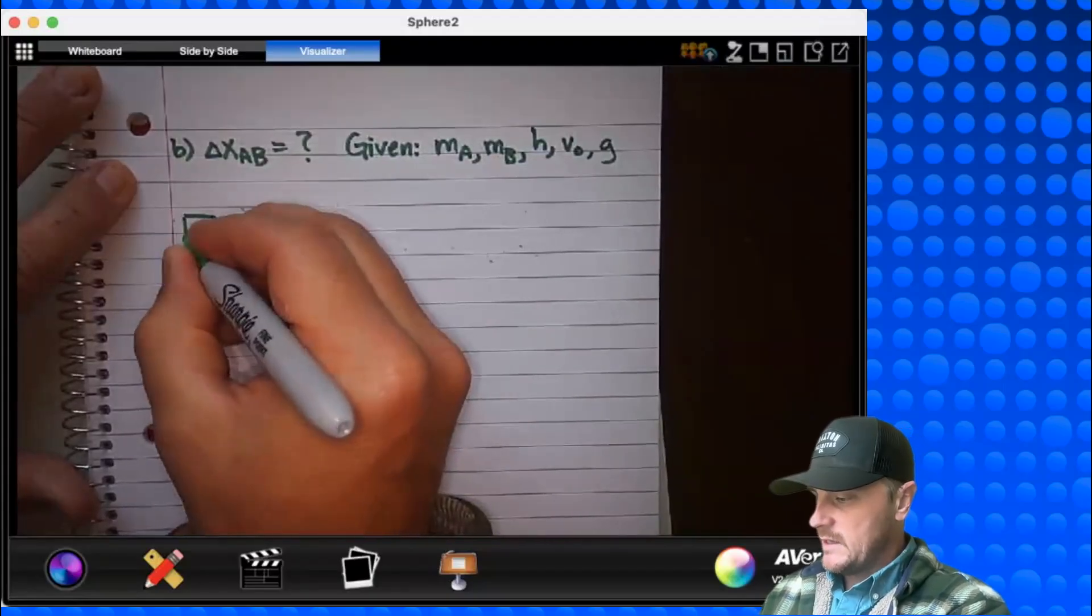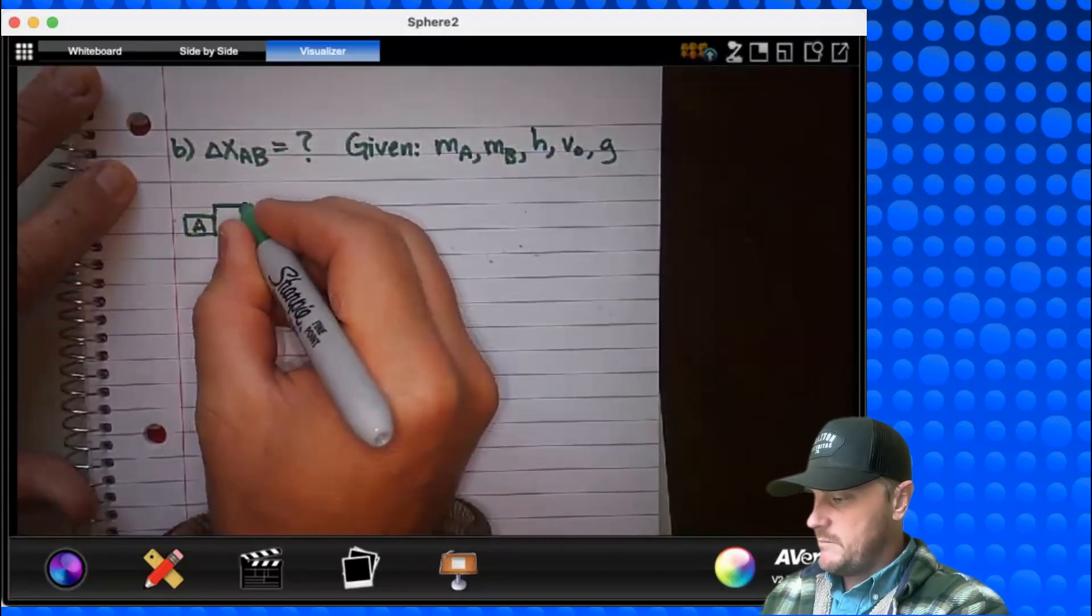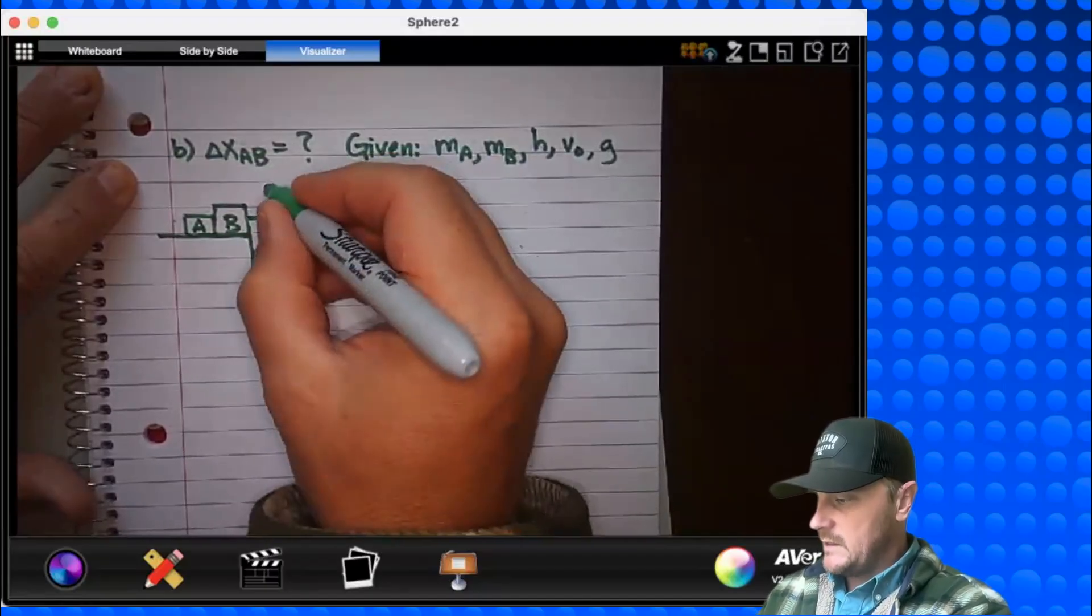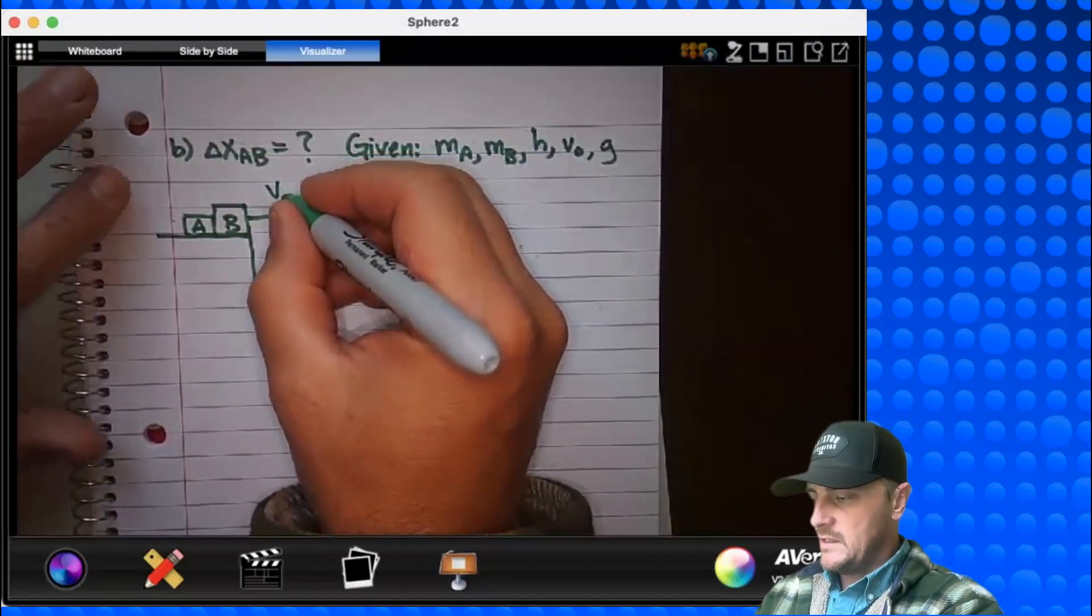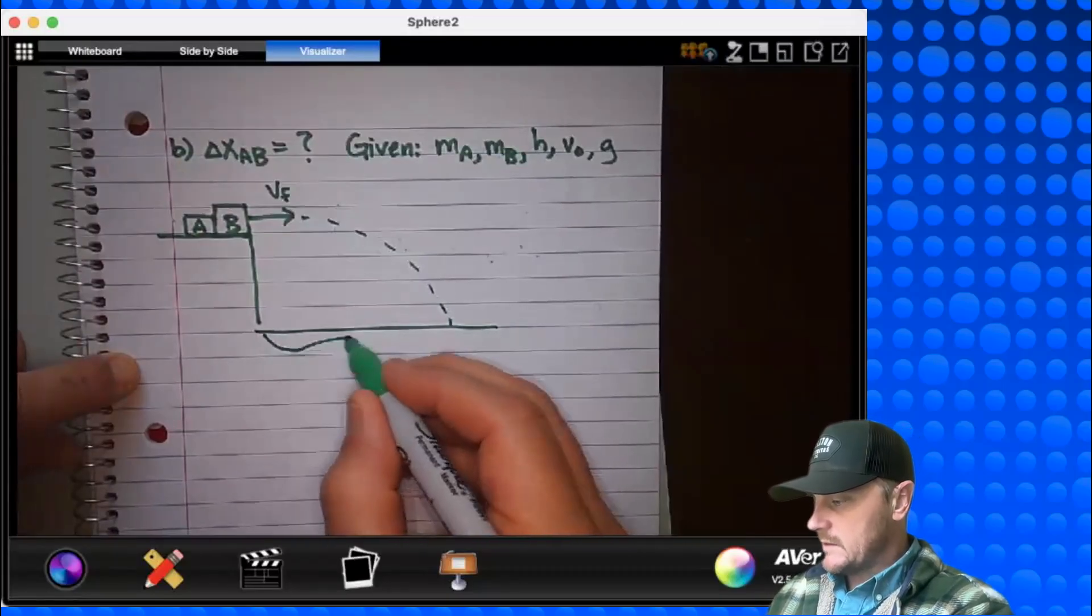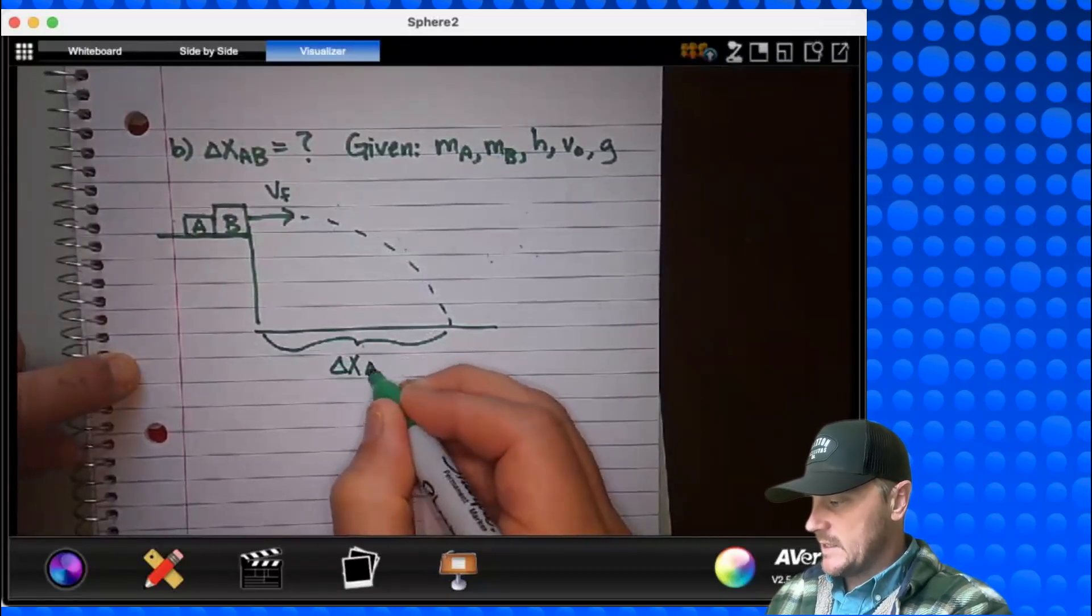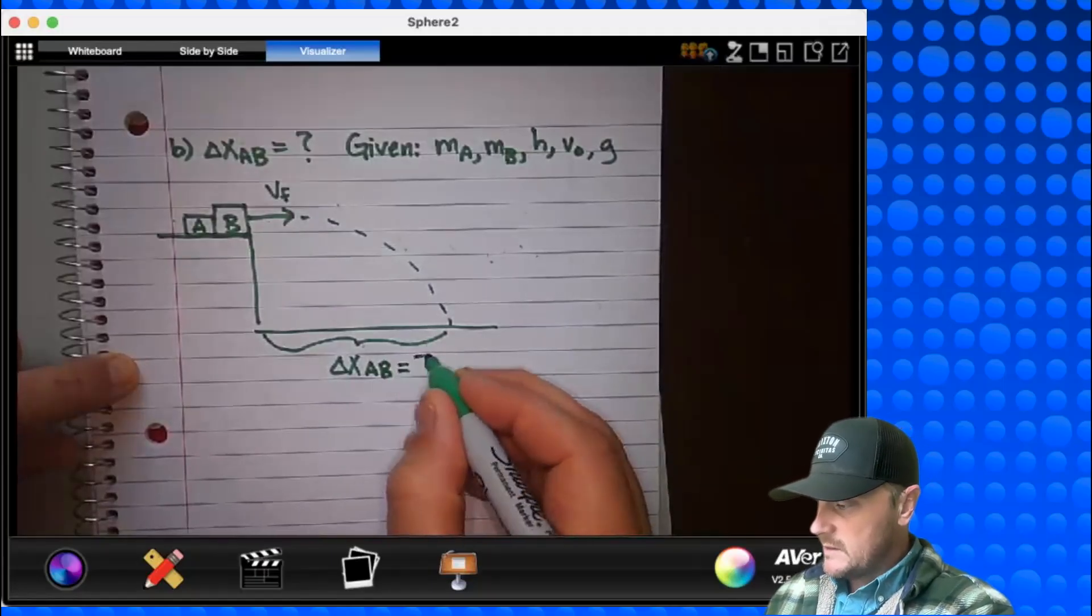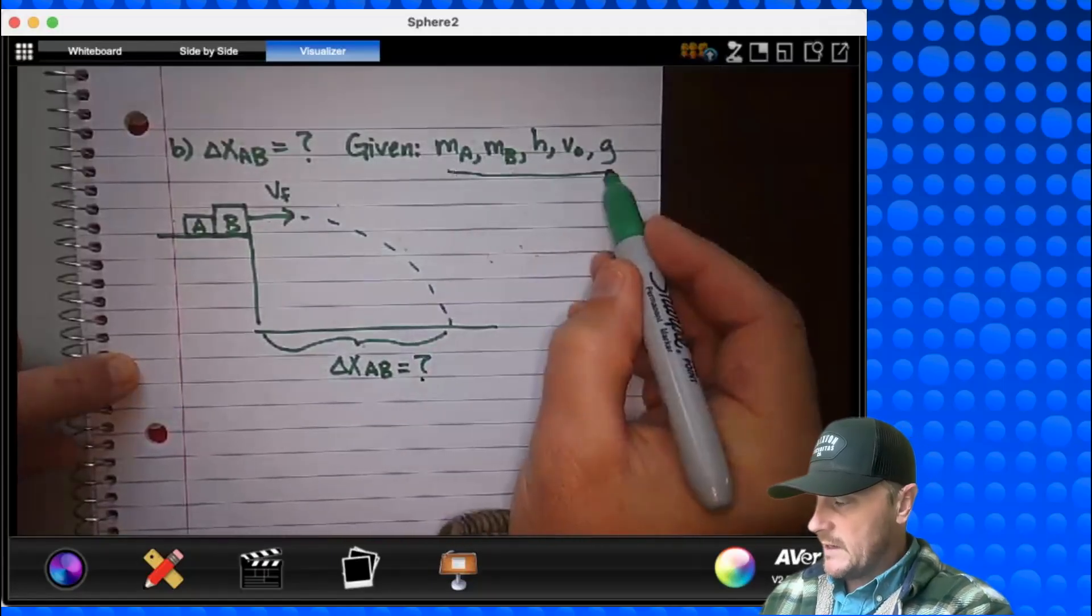So looking at my system, I've got A, and it's hitting B, and they're leaving the table with some velocity, and I'm going to call that velocity final. And they're going to hit, stick, they're going to launch, and they're going out some displacement, delta XAB, just like that. So how do I get this in terms of all of that?